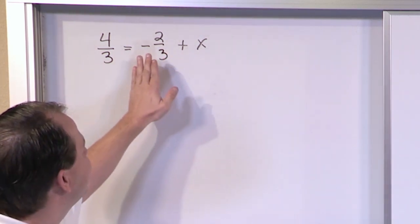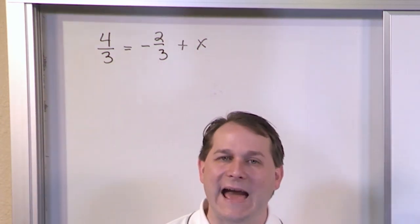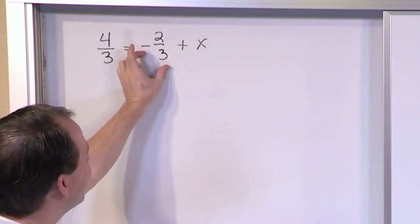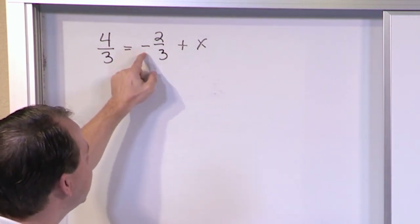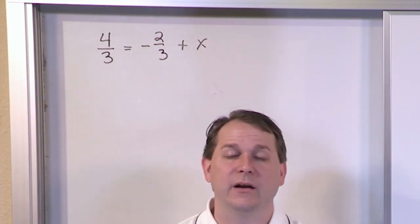So since this negative 2 thirds is negative here, we want to do the opposite. We want to add 2 thirds to both sides. Because if we add 2 thirds over here, it's going to go away with negative 2 thirds. It gives us zero. It's going to disappear. And whatever we do on one side, we have to do on the other.